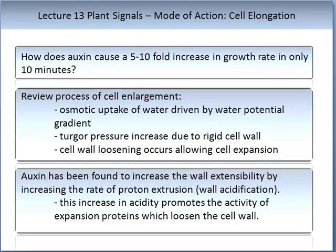Auxin can cause a staggering 10-fold increase in plant growth rate in only 10 minutes. To understand how, we need to review the role of cell elongation: osmotic uptake of water is driven by a water potential gradient; turgor pressure increases due to the rigid cell wall; cell wall loosening then allows expansion. Auxin increases wall extensibility by increasing the rate of proton excretion, or wall acidification. This increase in acidity promotes the activity of expansin proteins, which loosen the cell wall.